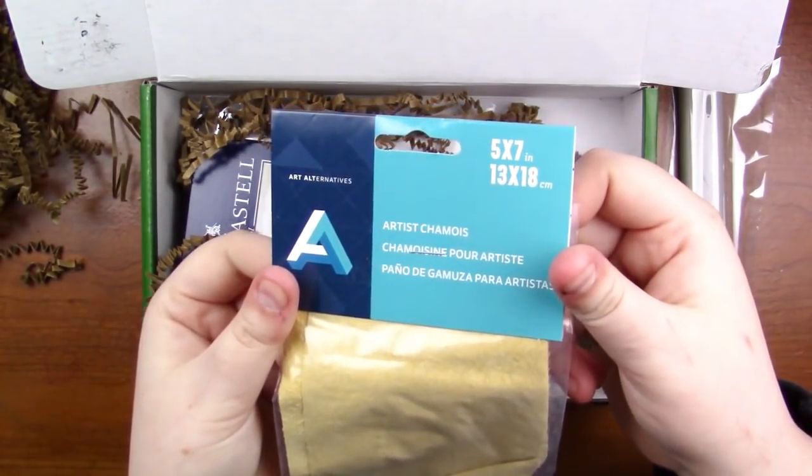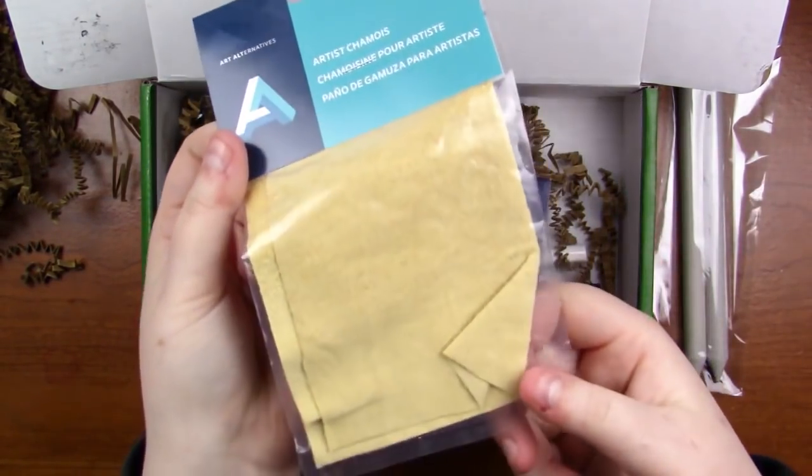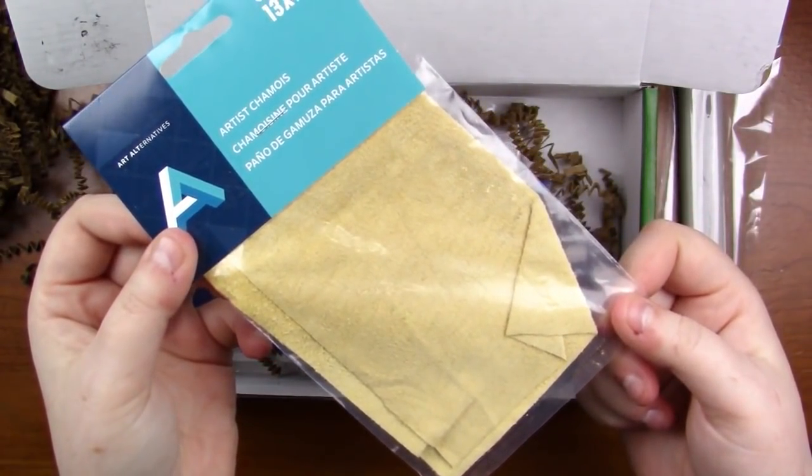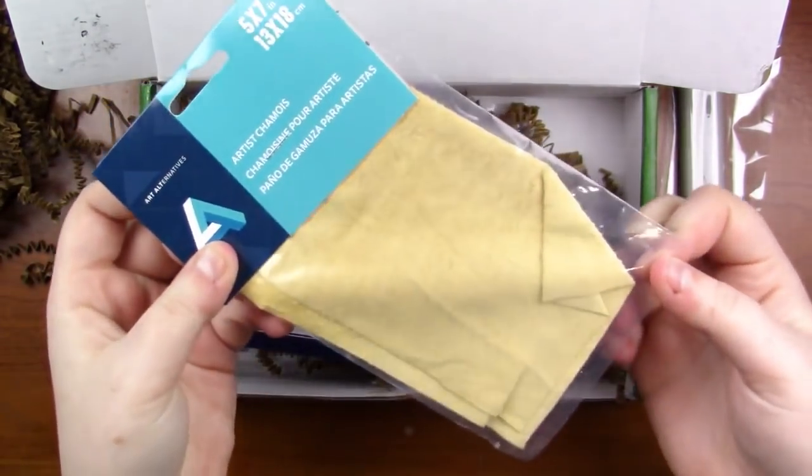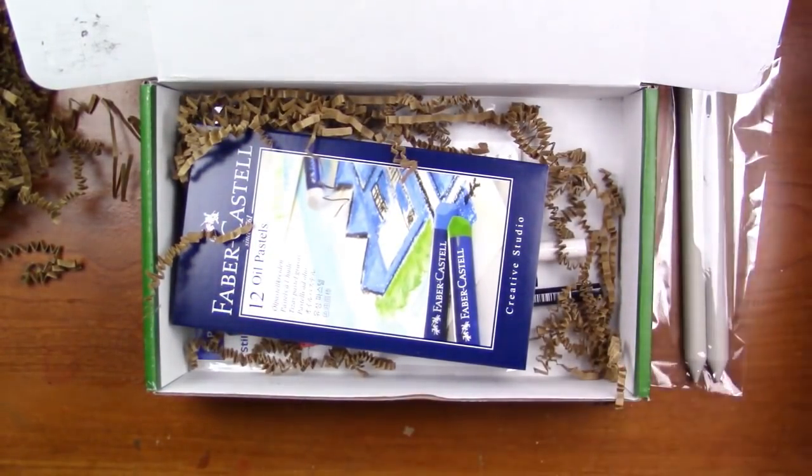Then we've got an art alternatives five by seven. I always butcher this word so I'm just going to call it a chamois. It's like a chamois? I don't know how to pronounce this. You can blend stuff with this like charcoal and graphite and oil pastels.